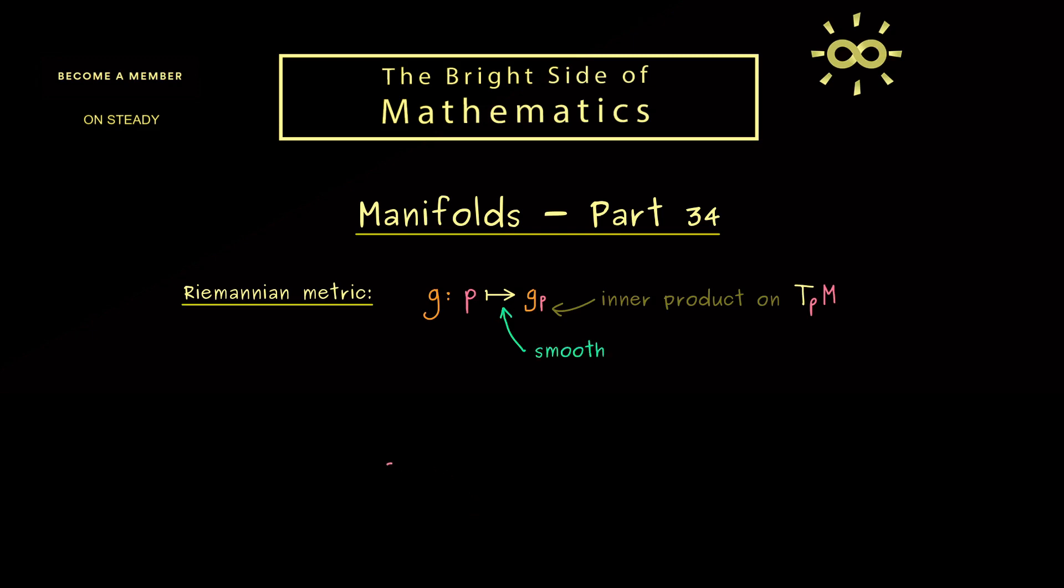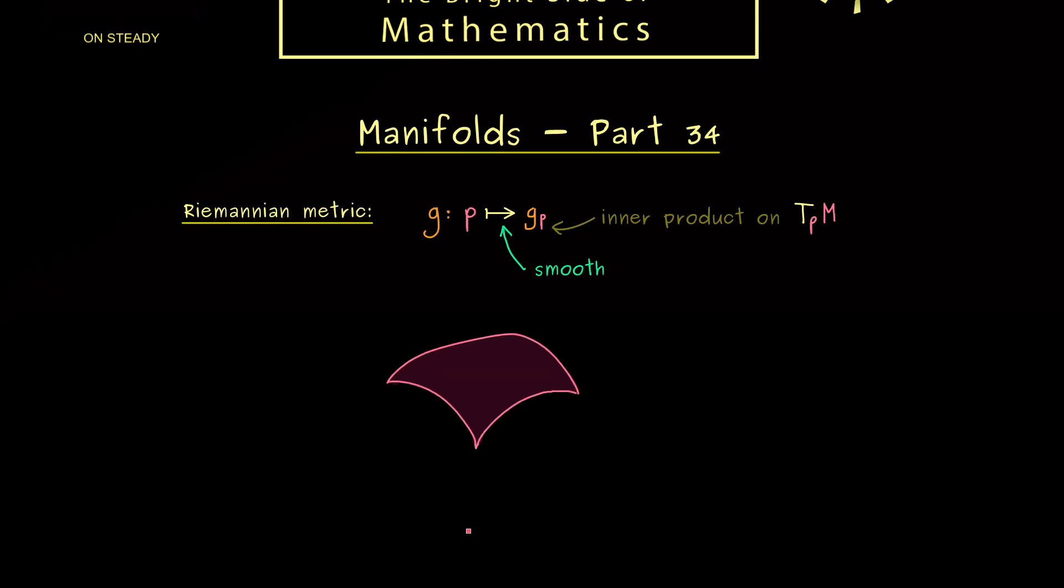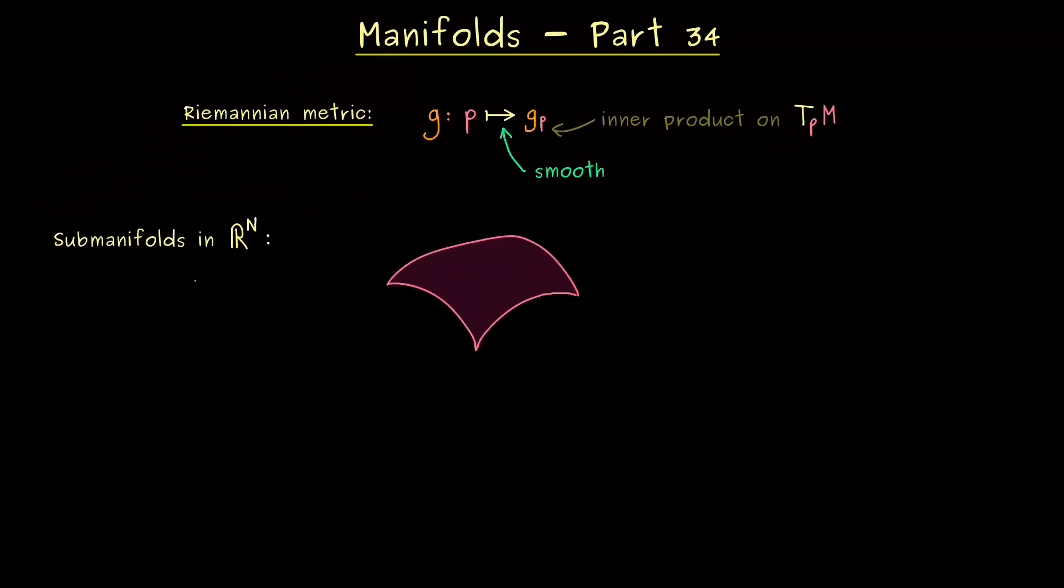And as usual, the first examples we should consider are submanifolds in R^n. They are easy to visualize and they should also already carry some geometry. In other words, there we already should have a canonical Riemannian metric.